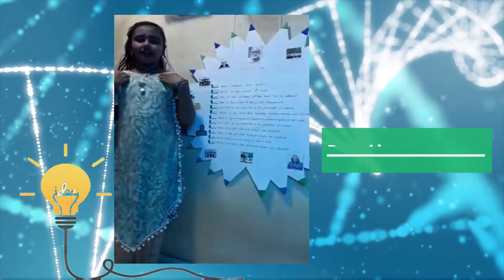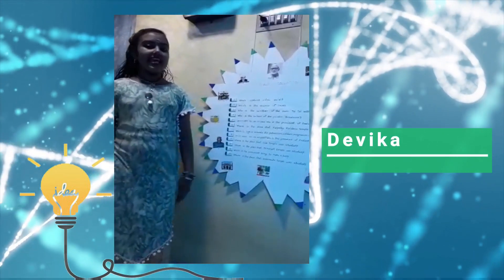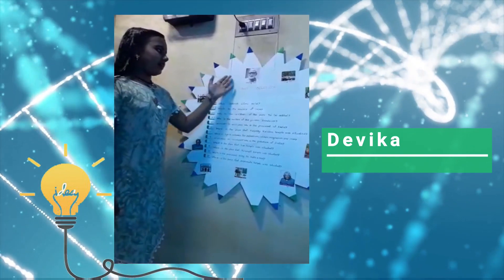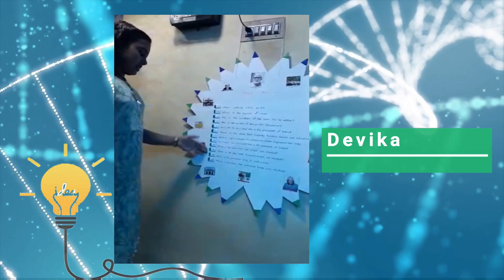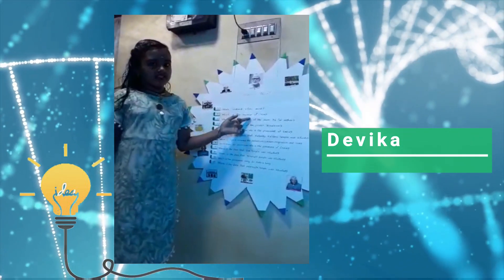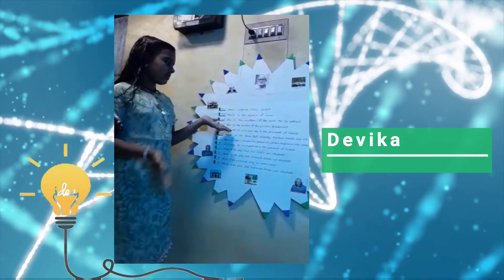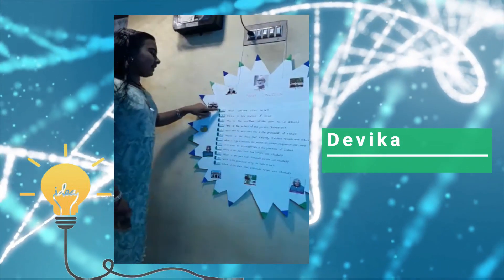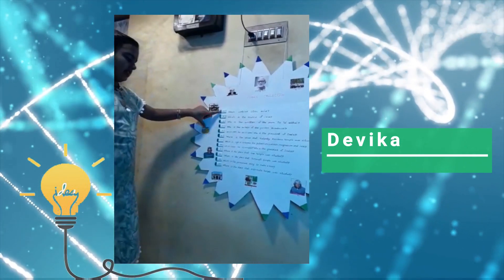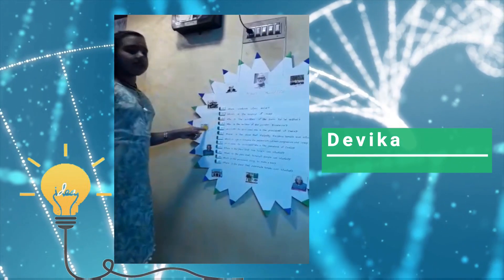Hi, I am Devika. I want to tell you about the use of a quiz machine so students can easily understand topics. Here are some questions with picture graphs and buttons. The first question is: which fruit contains citric acid? We don't know the answer, so we click on the green button. The answer is lemon.